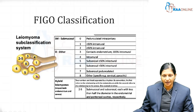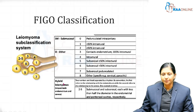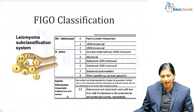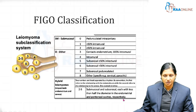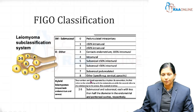Type 6 is a subserosal myoma which is less than 50% intramural; type 7 is a subserosal pedunculated fibroid; and type 8 covers other varieties. There are also hybrid leiomyomas which impinge both on the endometrium and the serosa. These are classified as types two to five — submucosal and subserosal — each with less than half their diameter in the endometrial and peritoneal cavities respectively.